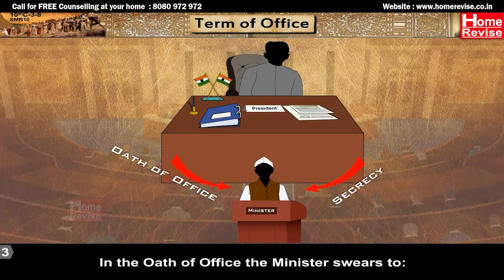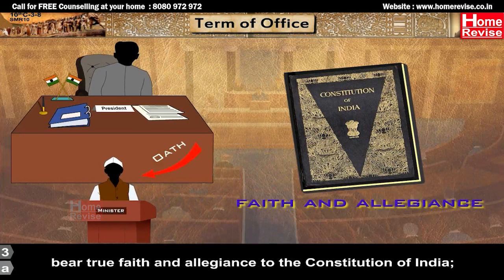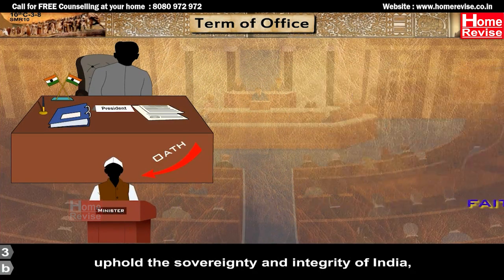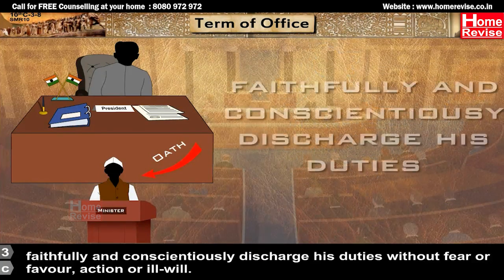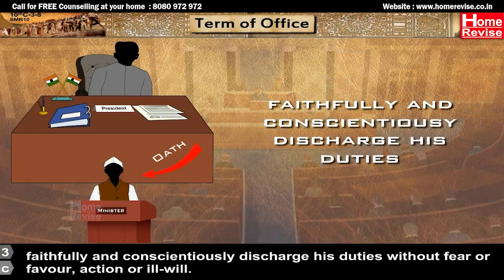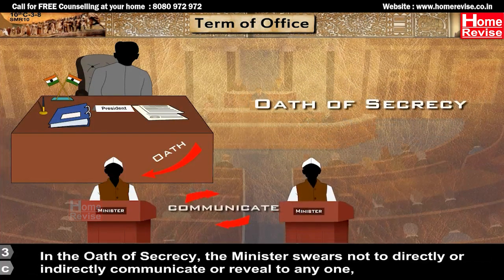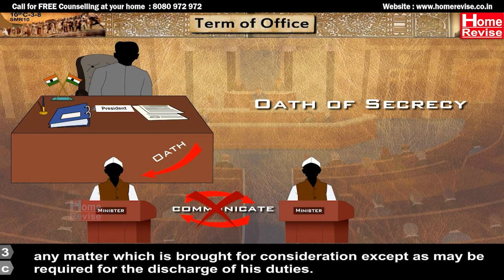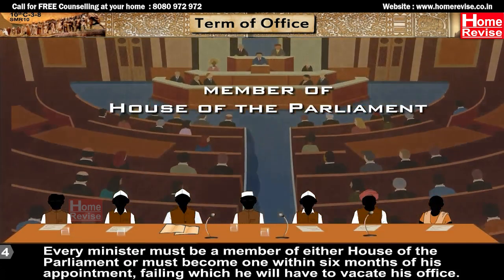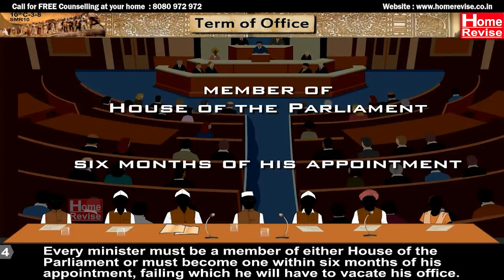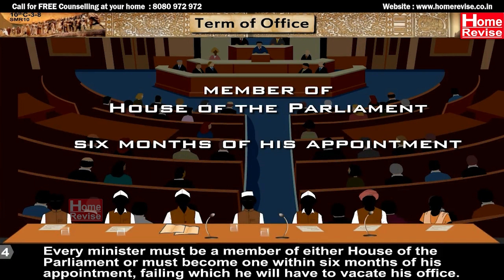In the Oath of Office, the Minister swears to: (a) bear true faith and allegiance to the Constitution of India, (b) uphold the sovereignty and integrity of India, (c) faithfully and conscientiously discharge his duties without fear or favour, affection or ill-will. In the Oath of Secrecy, the Minister swears not to directly or indirectly communicate or reveal to anyone any matter brought for consideration, except as required for the discharge of his duties. Every Minister must be a member of either House of Parliament or must become one within six months of his appointment, failing which he will vacate office.